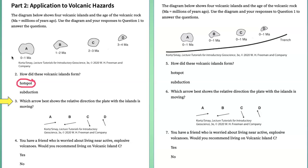Which arrow best shows the relative direction of the plate with the islands? Well, if the hot spot is over here right now, and these were previously over that hot spot, then this entire plate must be moving as shown in A.